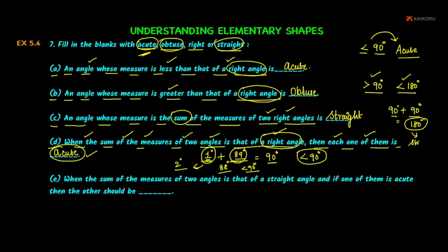Part (e): when the sum of the measures of two angles is that of a straight angle, and if one of them is acute, then what should the other be? We can add two angles together to make a straight angle.